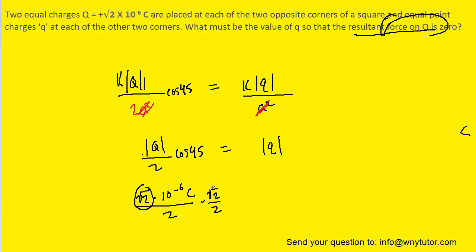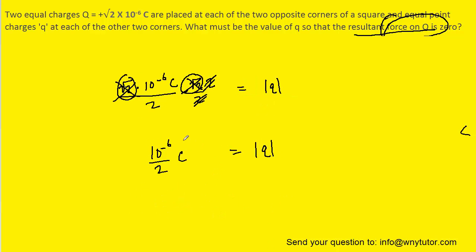Now, this radical two times this radical two will become radical four, which is two. And then this factor of two and that factor of two can cancel. And so it simplifies to ten to the minus six divided by two. And then if you perform that calculation, you will get five times ten to the minus seven Coulombs is equal to the absolute value of Q.